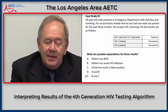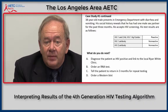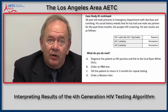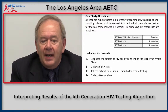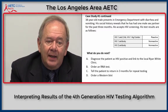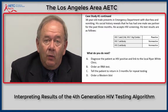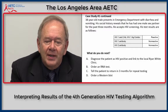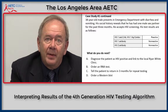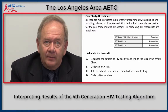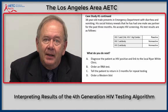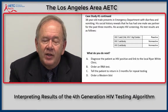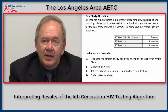We'll now continue with this case study: in this circumstance, what would you do next to resolve exactly what is going on? Would you diagnose this patient as HIV positive and link him to his local Ryan White clinic? Would you order an RNA test? Would you tell the patient to return in three months for repeat testing? Or would you order a Western blot? The correct answer is B — order an RNA test. You need to do a nucleic acid test for HIV RNA in order to determine whether acute infection is present. You would not give this person a diagnosis of HIV positive on the basis of a single test result.